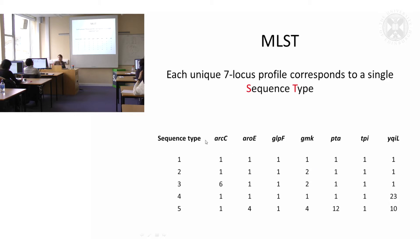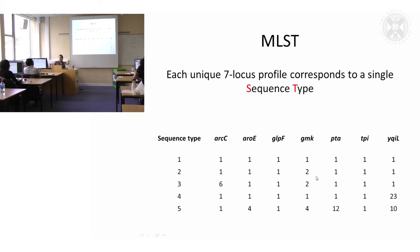In Staphylococcus aureus, there are seven genes used for multi-locus sequence typing — it tends to be between six and eight depending on the species. Each of these would be an allelic variant of a particular gene. So sequence type one has allelic variant one for all seven genes. Then sequence type two has allelic variant one for all genes except for one, so because it only has one variant difference, we call this a single locus variant of one.